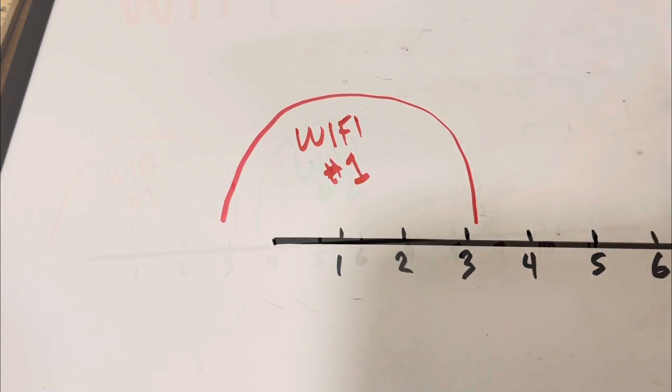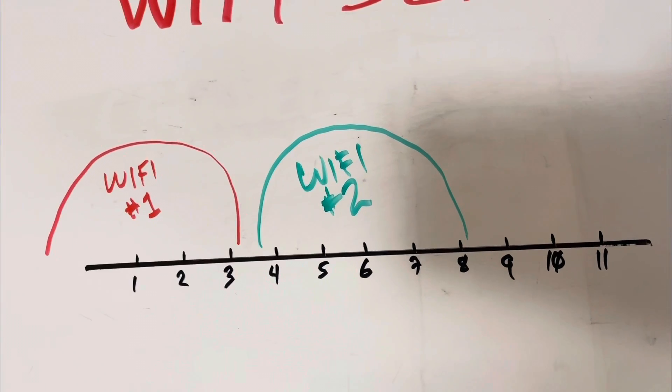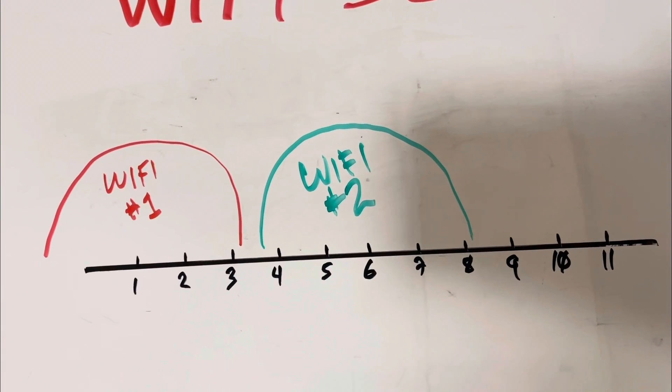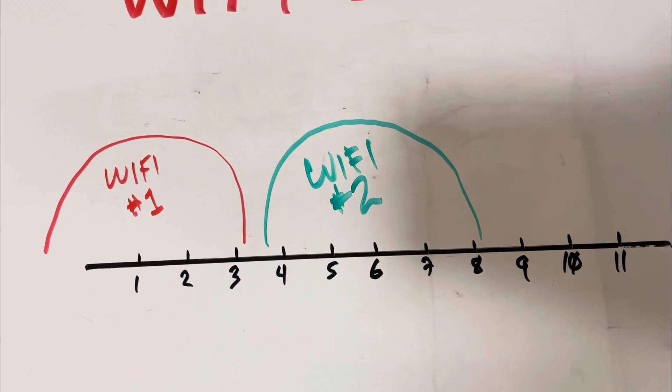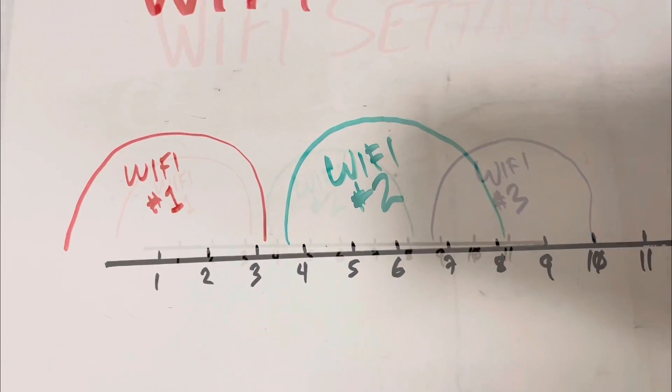So if we have the next router, it would look like this. It would be channel 6 and it would also take up two channels to the left and two channels to the right. These are two non-overlapping channels.